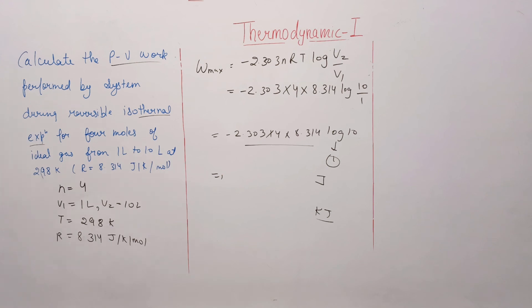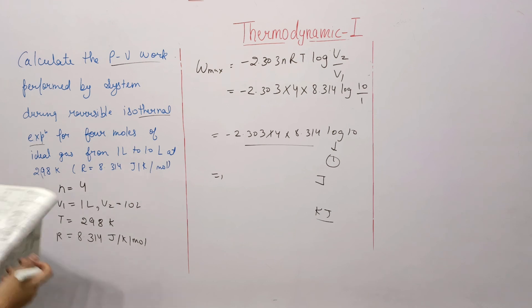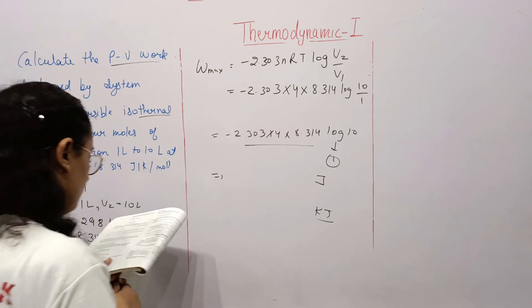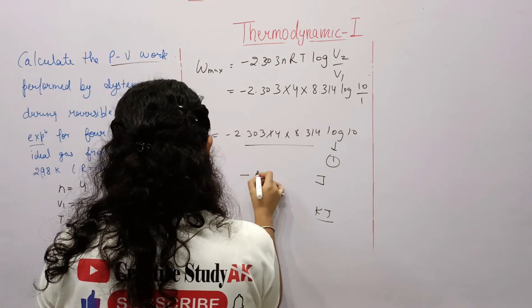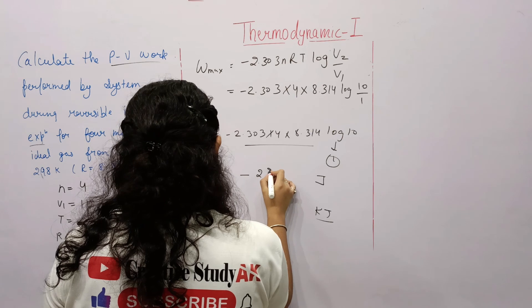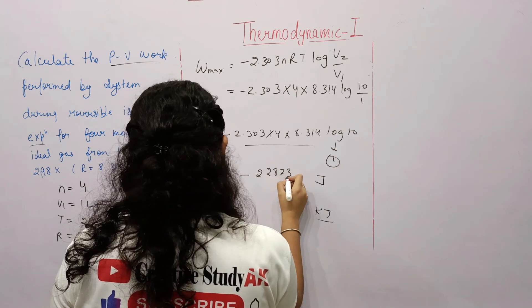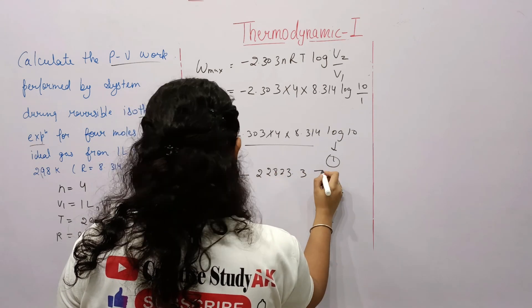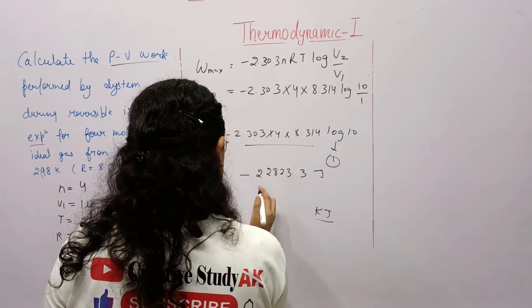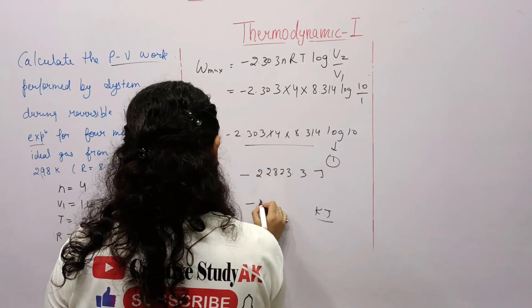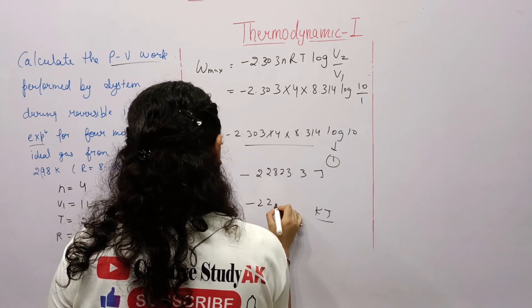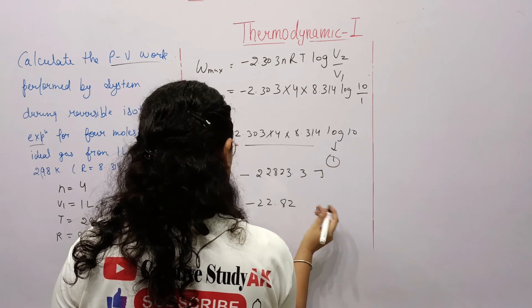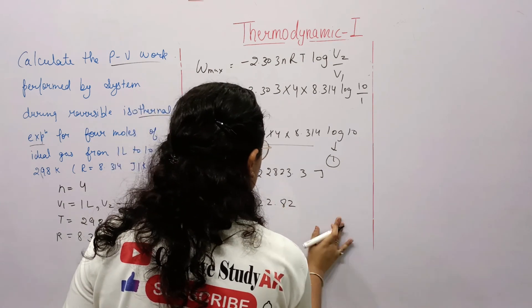The answer for numerical 2 is -22,823.3 joules. Converting to kilojoules: approximately -22.82 kJ.